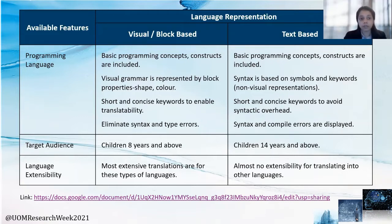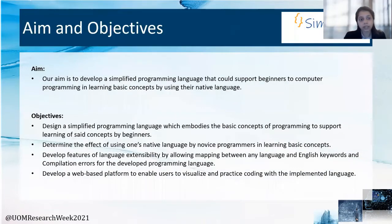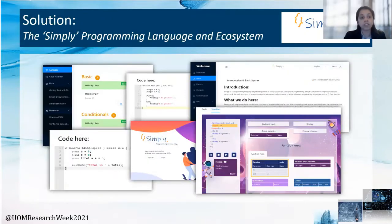In terms of language extensibility or translatability, the most extensive translations are found in visual languages, while there is almost no translation capability in text-based languages at the moment. There is also no single native-language translation support for either of these two categories. With that in mind, our aim is to develop a simplified programming language that supports beginners in computer programming and learning basic concepts by using native language, and our objectives have been implemented in our solution — the Simply programming language and ecosystem.